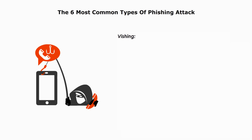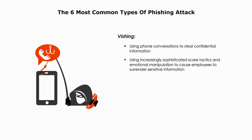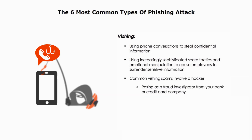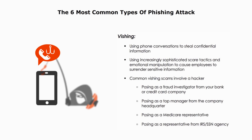Last but not least, the phishing method: vishing. Vishing uses voice conversation to steal your confidential information, using increasingly sophisticated tactics and emotional manipulation to cause victims to surrender sensitive information. Common vishing scams involve hackers posing as a fraud investigator from your bank or credit card company, or posing as a top manager from the company headquarters, or posing as a Medicare representative, or posing as a representative from the IRS or Social Security agency.